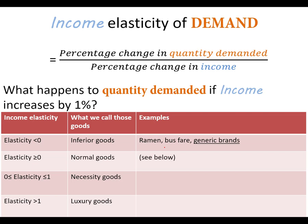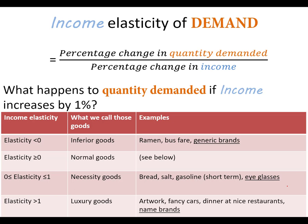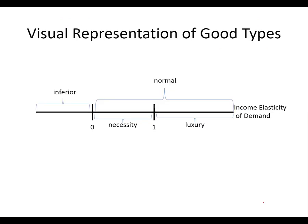With normal goods, broken into two categories, let's look at necessities. Bread: if my income doubles, I'm not going to eat twice as much bread — maybe a little bit more. Things like eyeglasses: I'm not going to buy twice as many if my income goes up. But with luxury goods, we see a big change — if my income goes up by 1%, I'll buy more than 1% extra of things like artwork and name brands. On a number line representing income elasticity of demand, negative numbers to the left are inferior goods, zero to one are necessities, and greater than one are luxuries.